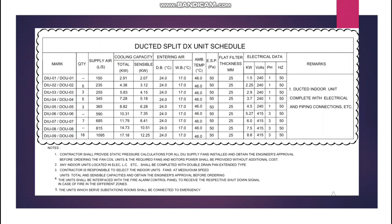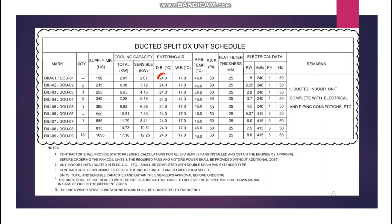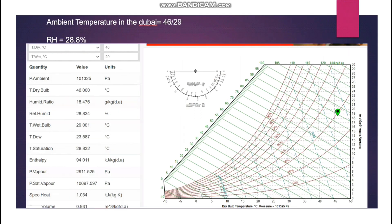Let's verify these one by one using an example. The on-coil temperature shown here is 24 DB / 17 WB — a constant temperature followed for all units in this normal office building schedule. Using an online psychrometric chart with 24°C dry bulb and 17°C wet bulb entered, the RH value comes out to almost 50%, which is the comfort condition for the room. In addition to RH, we also need to see the humidity ratio and the dew point temperature.